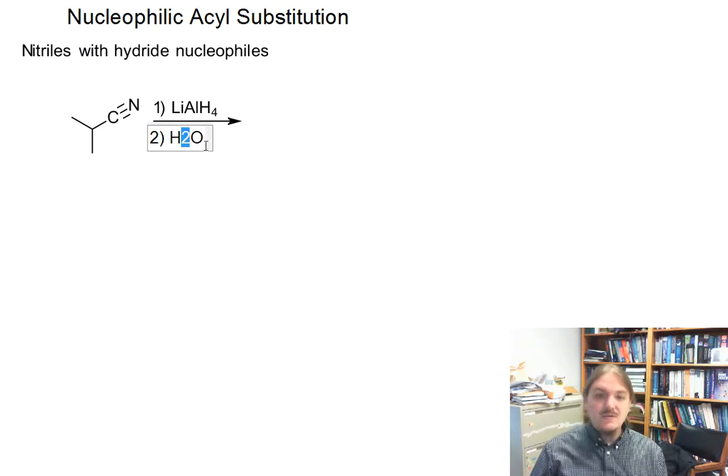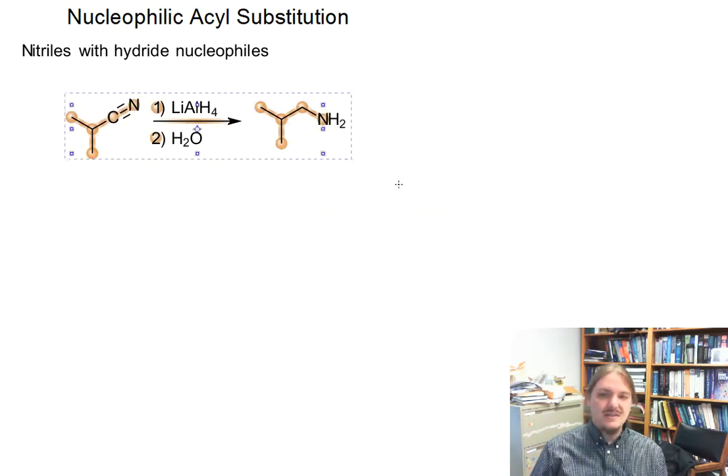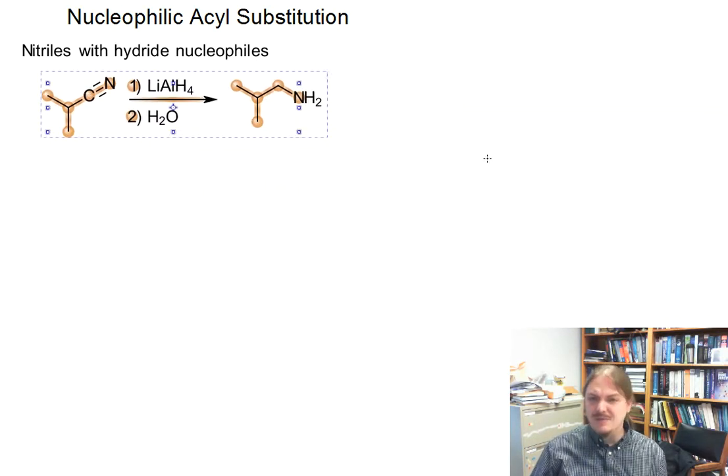I also mentioned this reaction in my video on cyanohydrins a while back, but nitriles can be reduced to amines using lithium aluminum hydride. In fact, nitriles can be reduced to amines by catalytic hydrogenation and other methods as well.